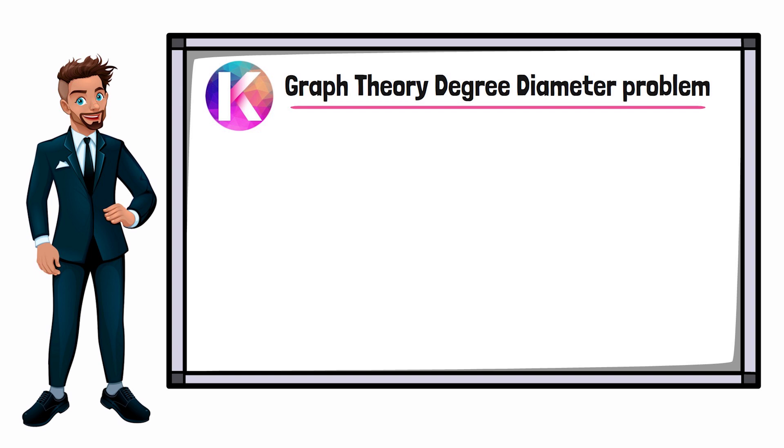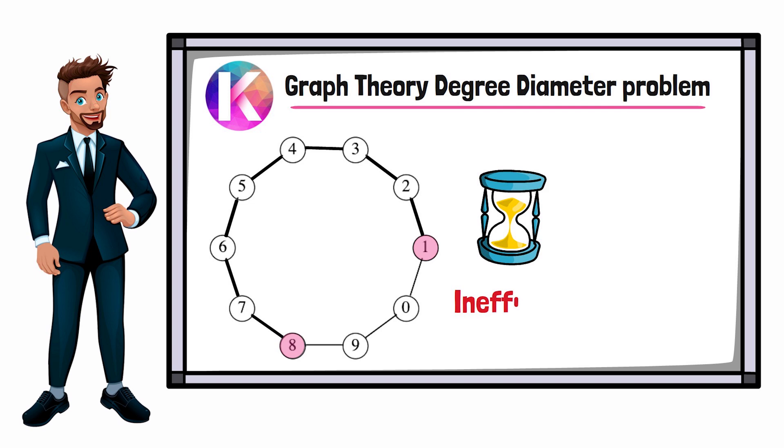Kadena uses an obscure branch of math called the graph three degree diameter problem. If we took 10 blockchains and tried to connect them all together in a circle, in order to go from chain one to chain eight, you would have to go from chain one to chain two to chain three to chain four, all the way around the circle until you got to chain eight. This would be very time consuming and inefficient.